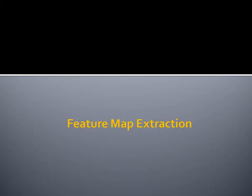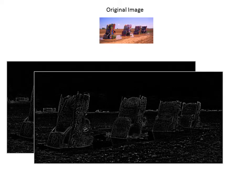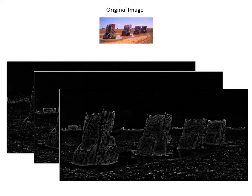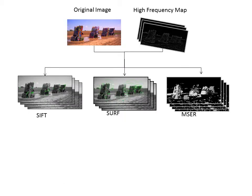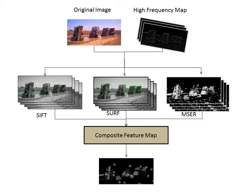We then extract feature maps using feature detection algorithms such as SIFT, SURF, and MSER. The original image and the corresponding three high-frequency map images are used to extract 50 key features using each algorithm. Using SIFT, SURF, and MSER, we extract individual feature maps and then, using a linear combination of these maps, we build a composite feature map.